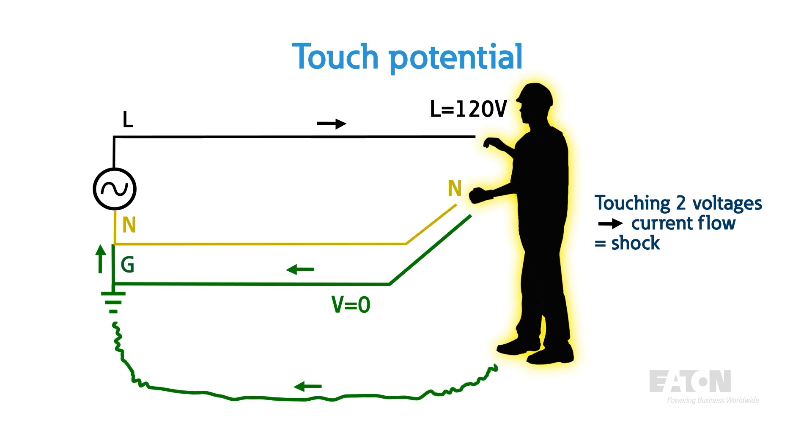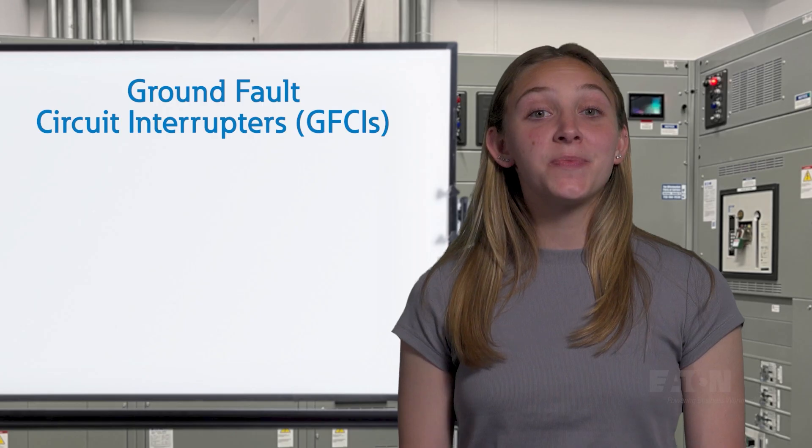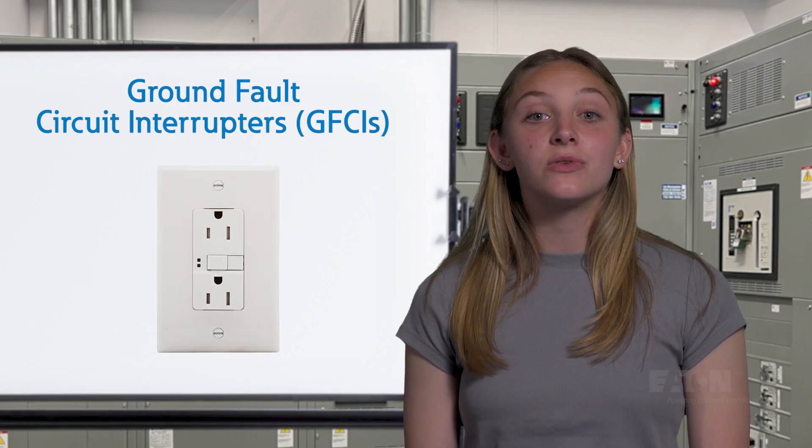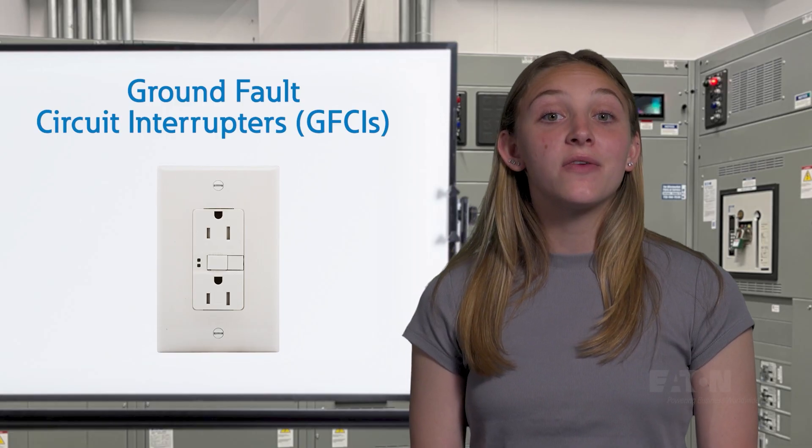There may not be a ton of current leaking out, but that little bit could be fatal to people or may energize something that wouldn't normally be energized and thus create a touch shock hazard. In your bathroom or kitchen at home, you likely have special outlets that include GFCIs or ground fault circuit interrupters.